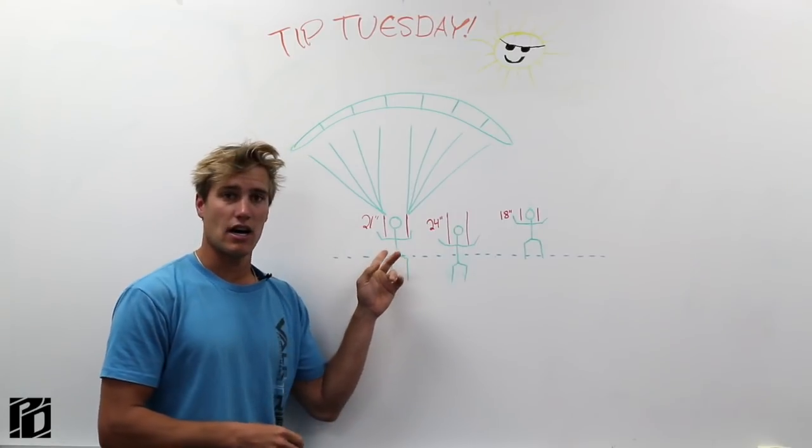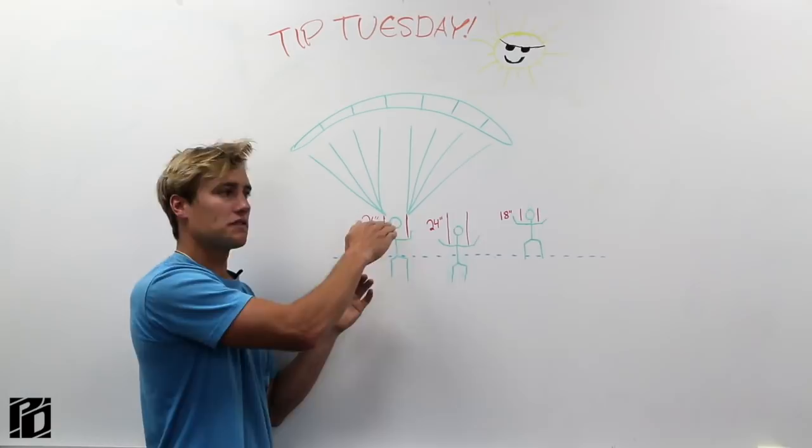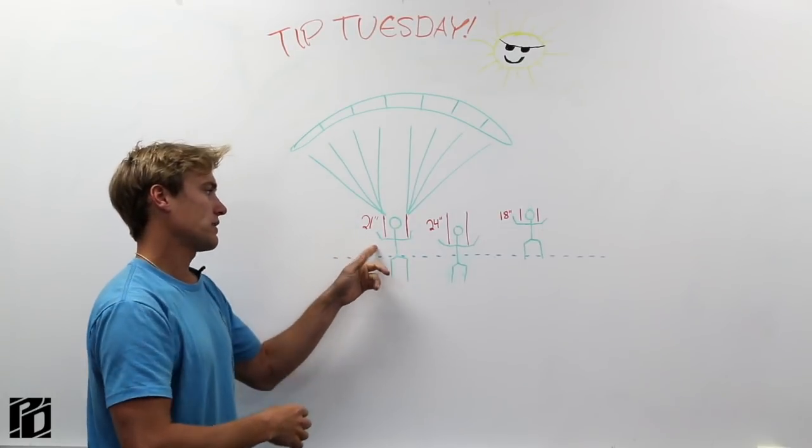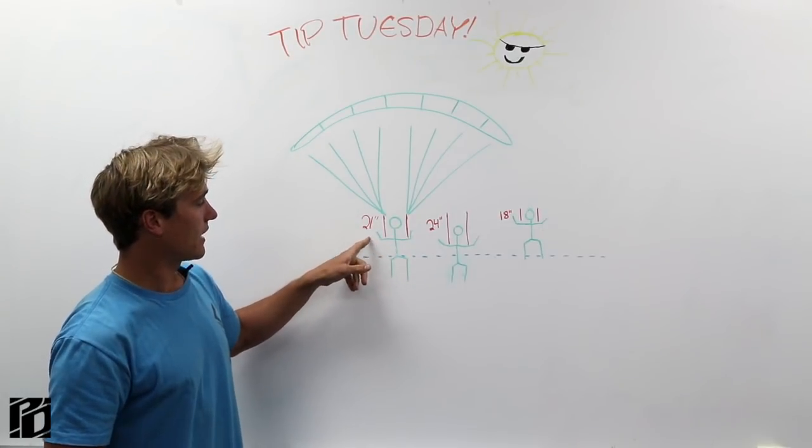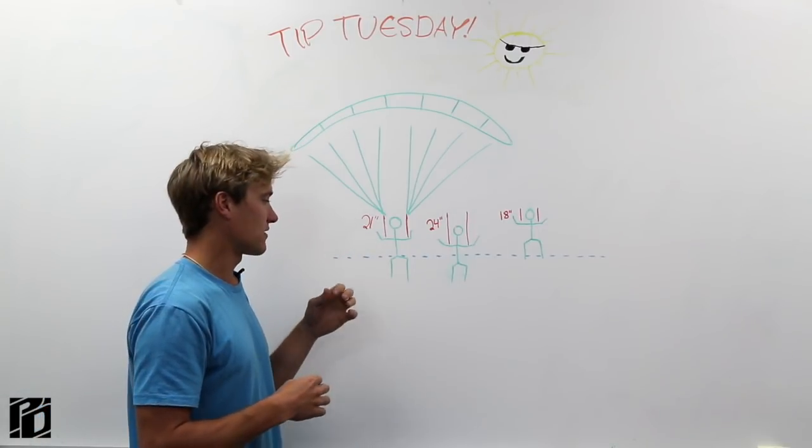So first, I've got three stick figures up here. It's all the same person, but they all have different riser lengths. So this first jumper, their riser length is 21 inches. That's kind of an industry standard for riser length.